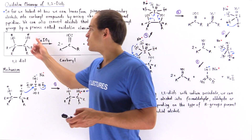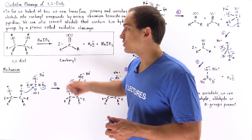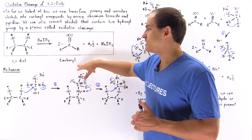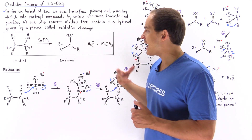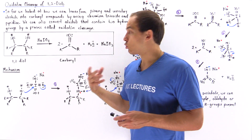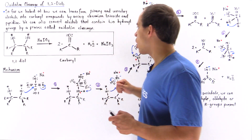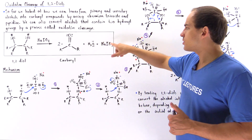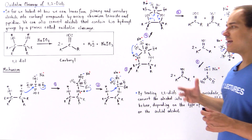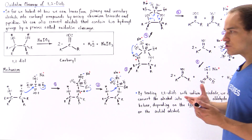Basically we take our general 1,2-diol, we mix it with sodium periodate, and we produce two carbonyl molecules. These can be aldehydes, formaldehydes, or ketones depending on what the initial R groups are. We also produce water as well as another byproduct molecule.